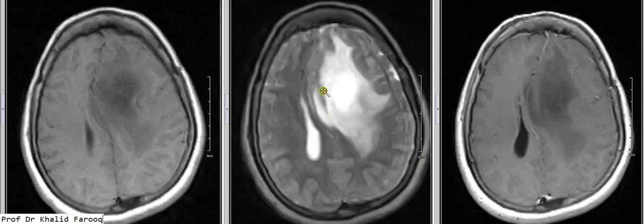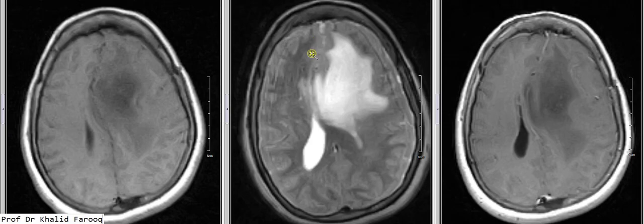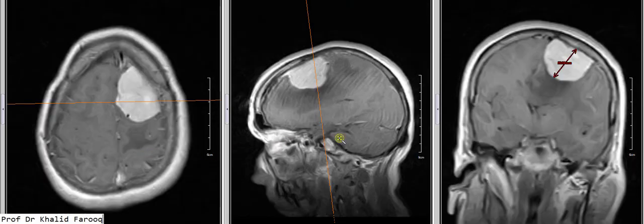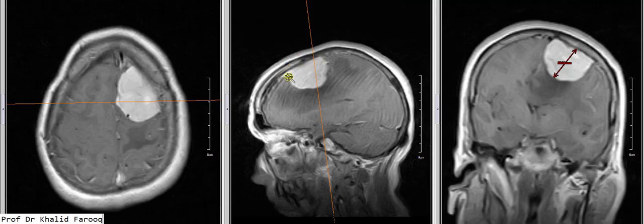Here we can see axial, sagittal, and coronal post-contrast images. We can clearly say that this is an extra-axial mass which is meningeal-based, and dural tail sign is also noted in the sagittal image. This is an example of meningioma. Thank you very much. Assalamualaikum warahmatullahi.